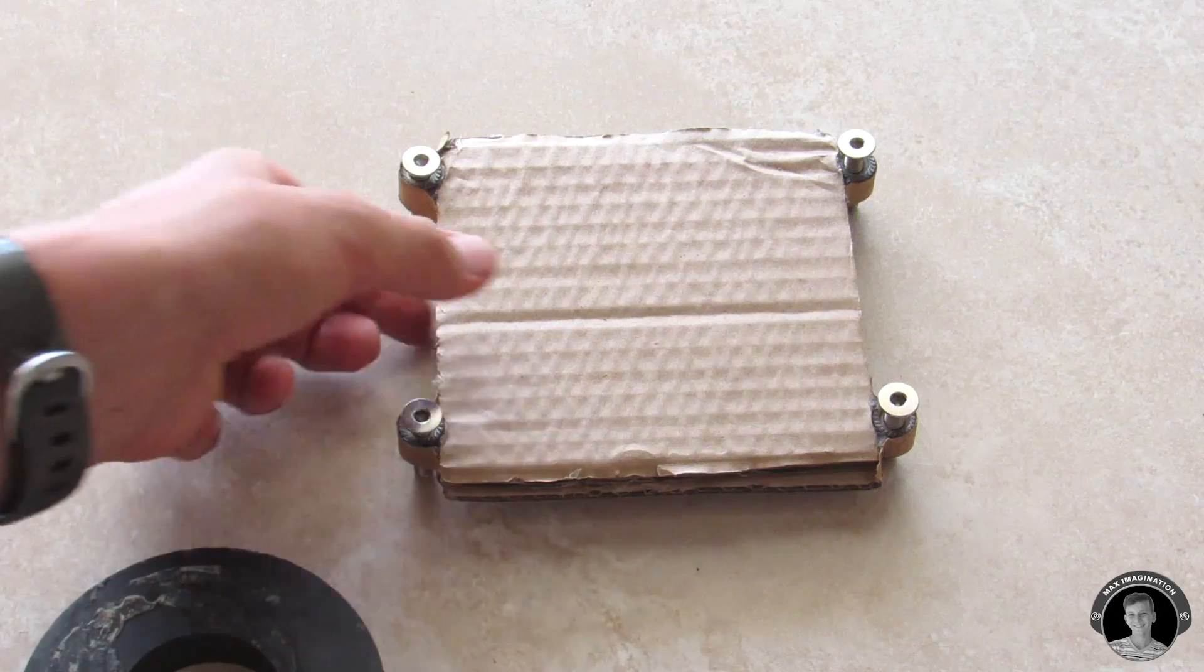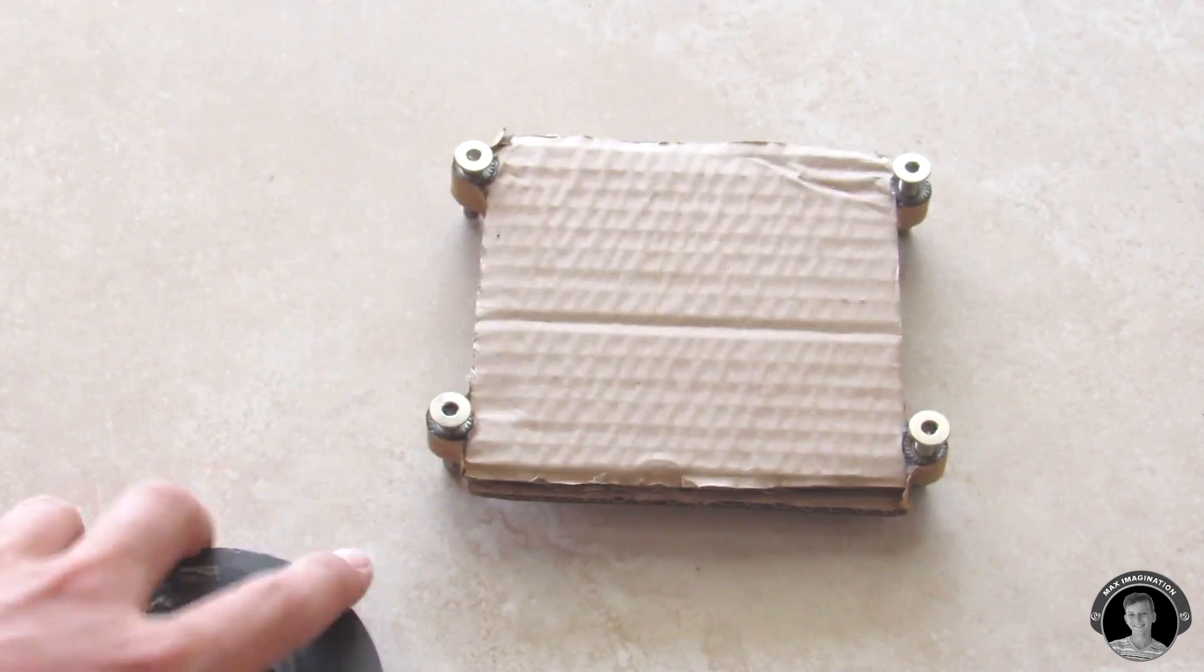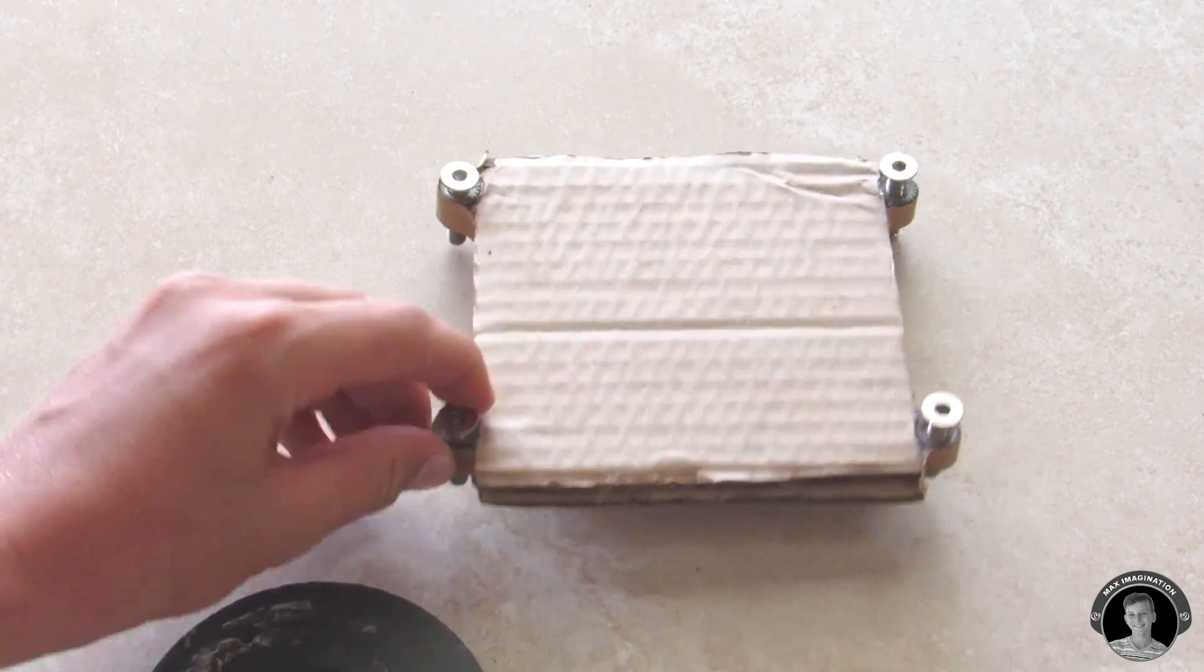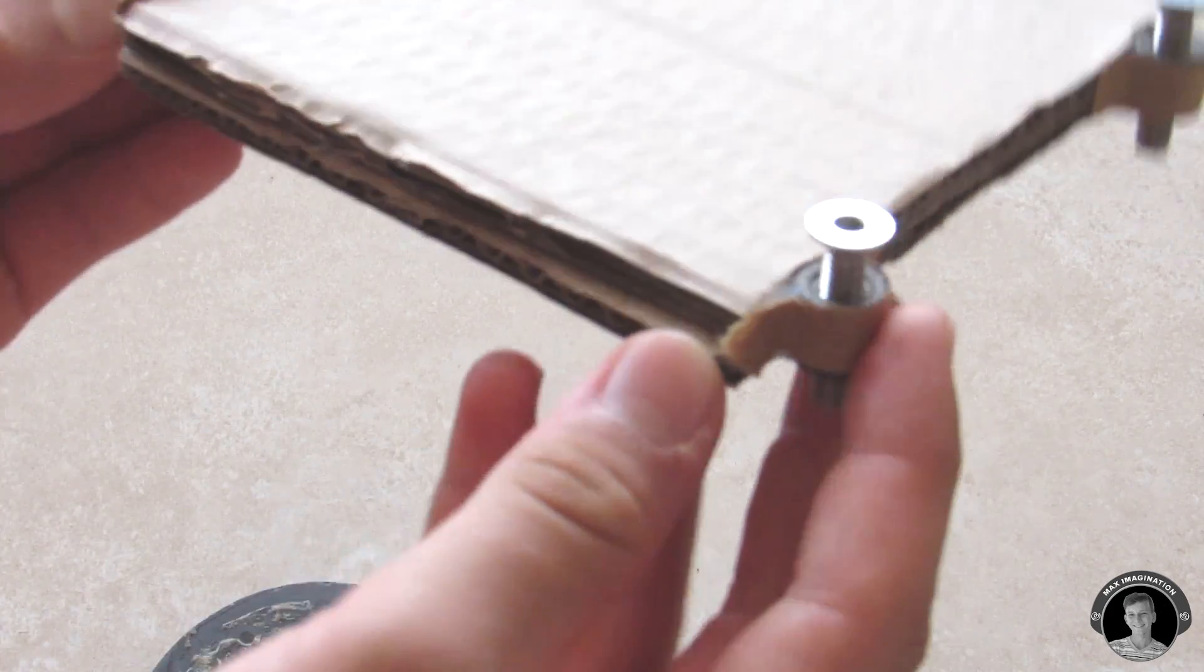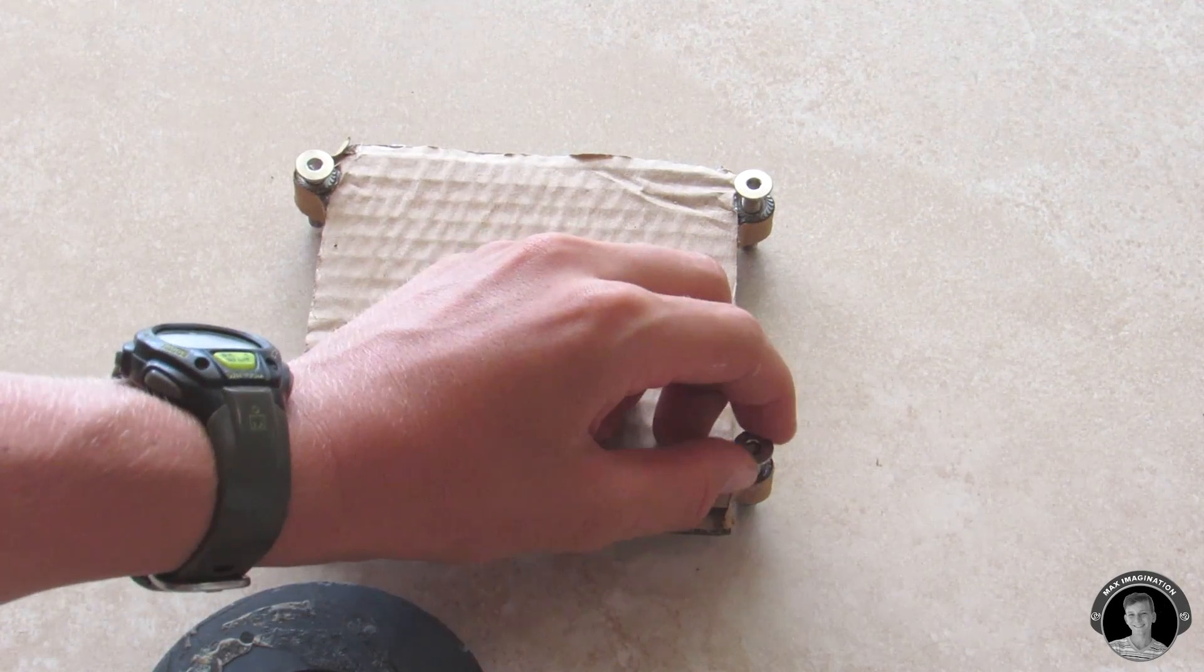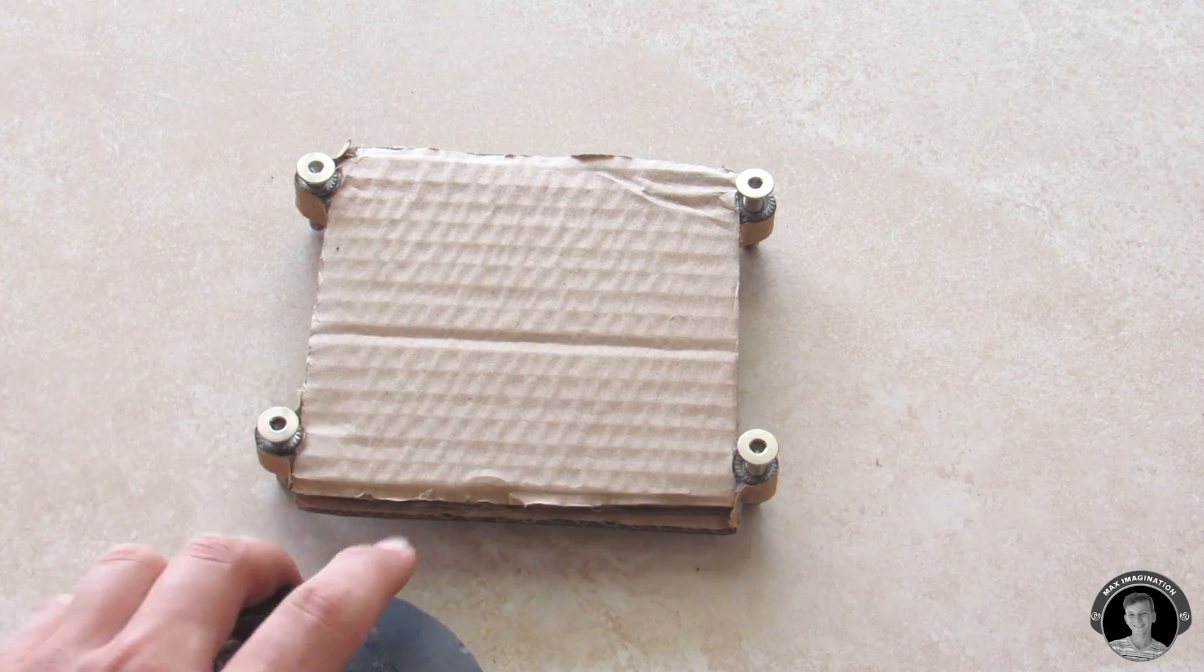So as you can see here guys, I made a cardboard base for a ring magnet right here. It has these hex nuts integrated right into here with these bolts.